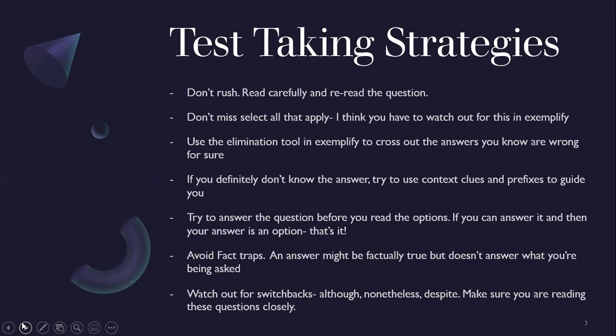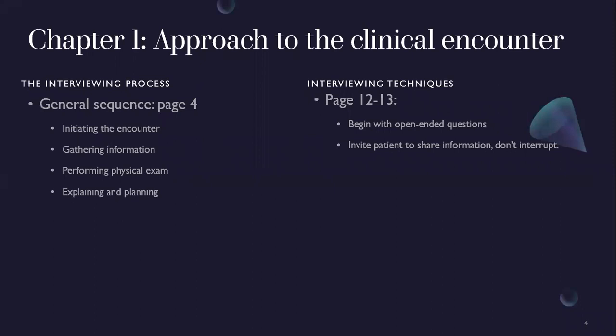If you don't know the answer, try to use context clues and prefixes. Try to answer the question before you read the options — if you can answer it in your head and find your answer as an option, that's it. Avoid fact traps — an answer might be factually true but not answer the question asked. Watch out for switchbacks: words like 'although,' 'nonetheless,' 'despite,' which can trick you up.